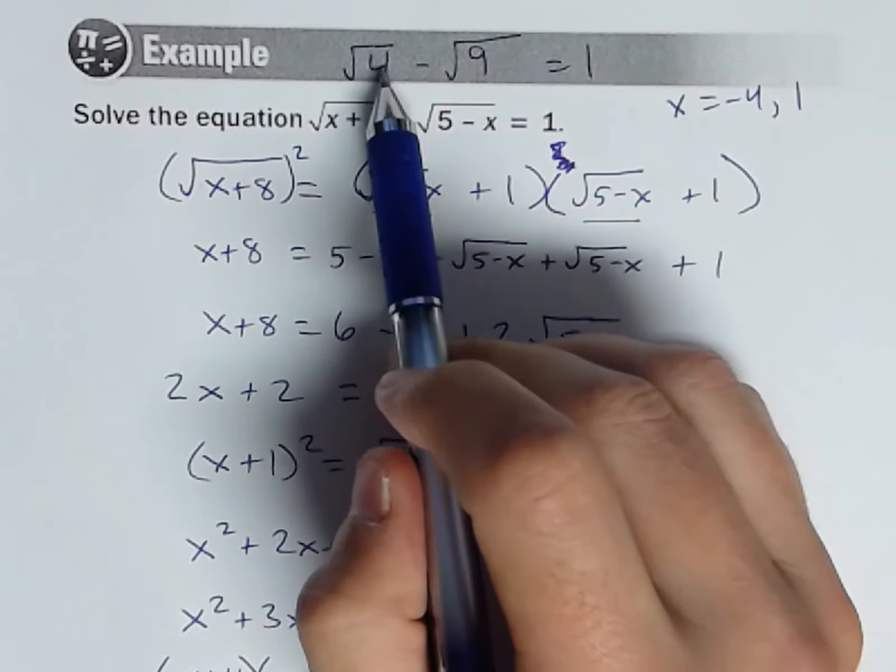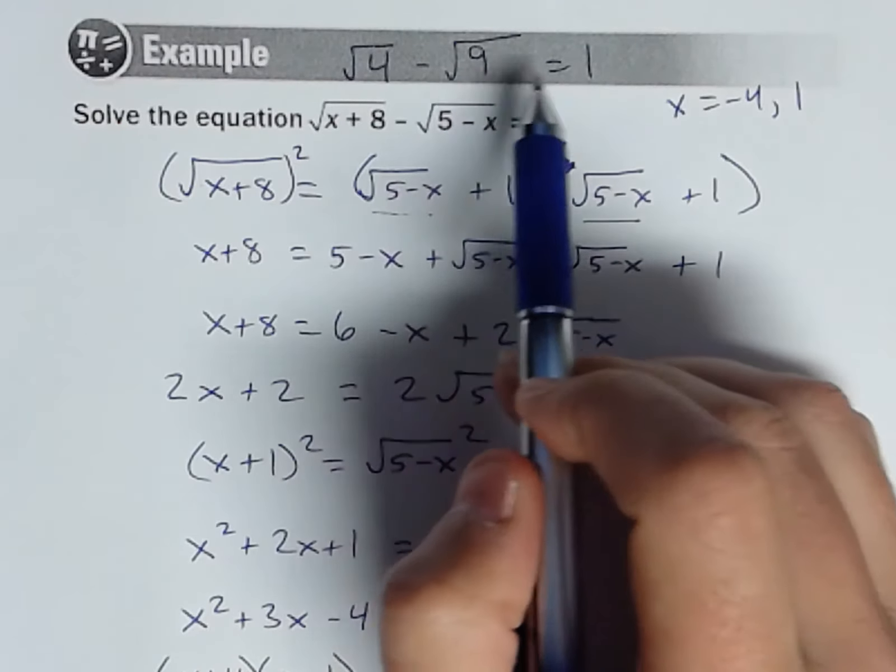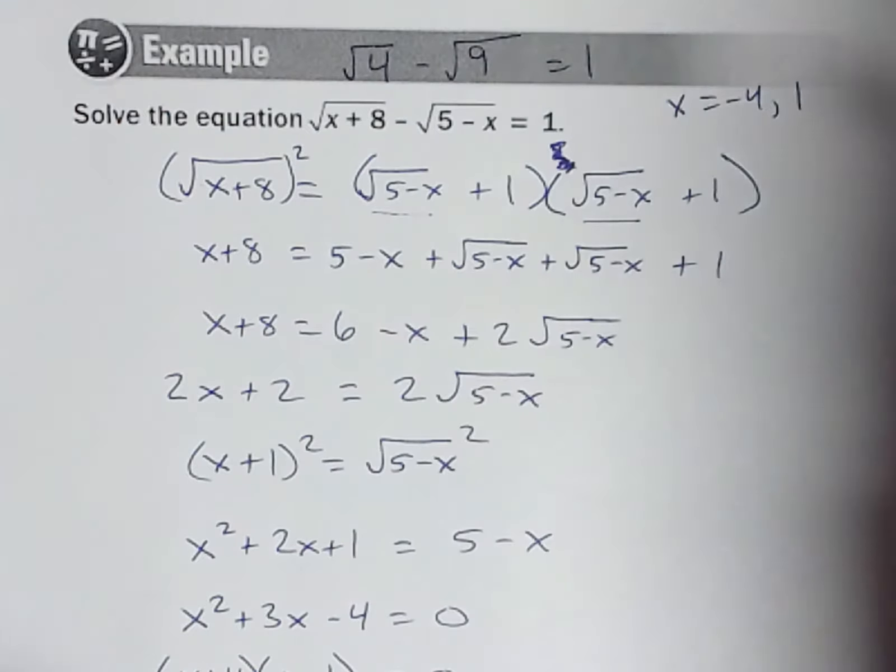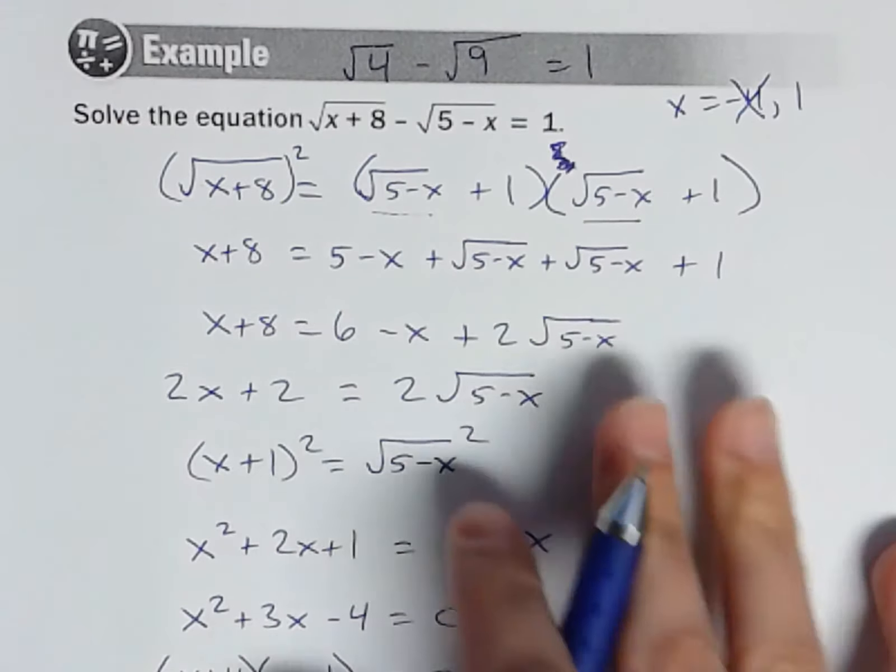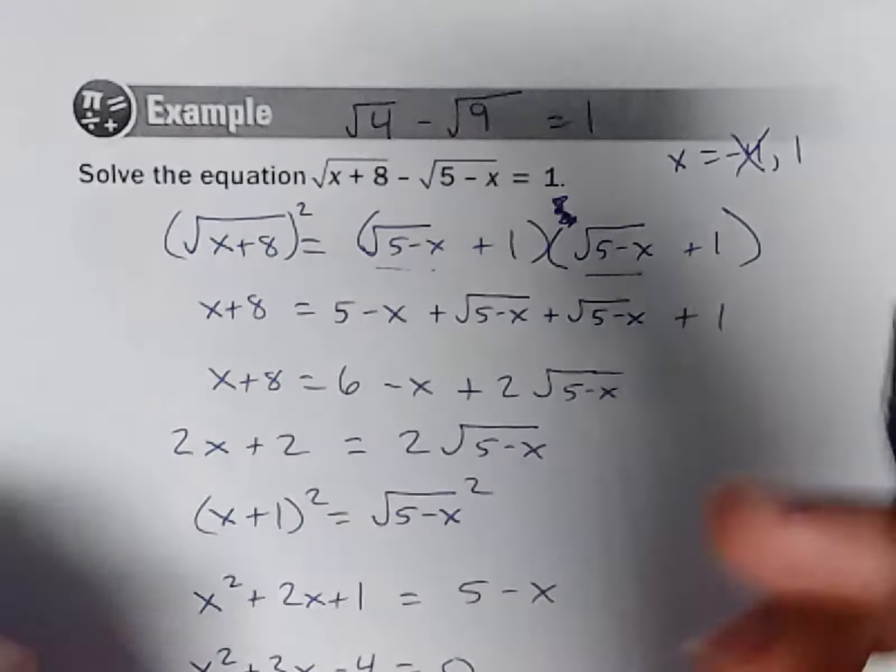Well, that's not going to work, is it? 2 minus 3 would equal negative 1. So negative 4 looks like doesn't work. Okay, let's try 1 just to make sure.